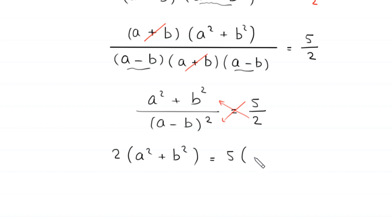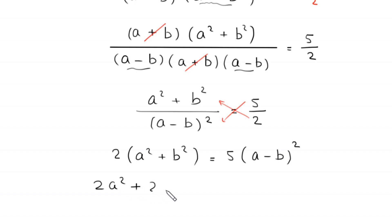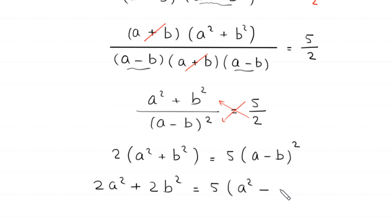This gives us 2(a² + b²) = 5(a - b)². Expanding the left side: 2a² + 2b². We expand (a - b)² on the right side to get a² - 2ab + b².